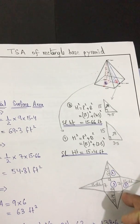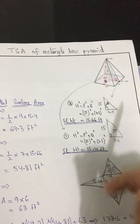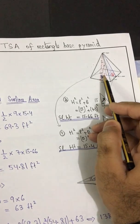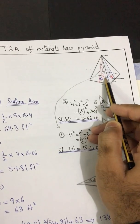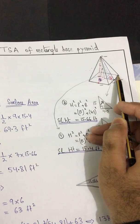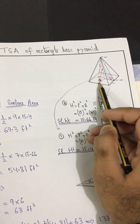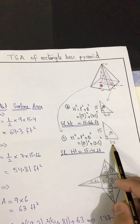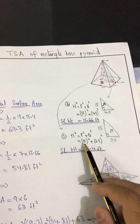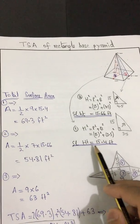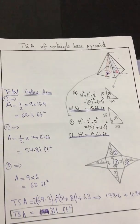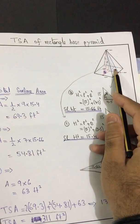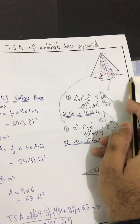For triangle number one, the base is half of 7, which is 3.5. Applying Pythagoras theorem, the second slant height is 15.4 feet.